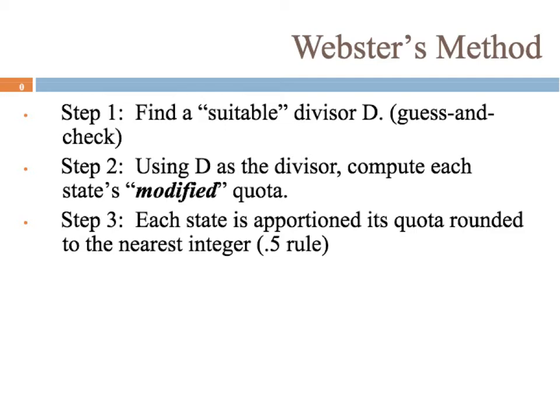We're finding a suitable divisor and using that to compute each state's modified quota. This time the rounding is a little different. With Jefferson's, we used lower quota; with Adams', we used upper quota. This time we're just going to round like normal — use the normal 0.5 rule. If the decimal is 0.5 or higher, you round up; if it's lower than 0.5, you round down to get the lower or upper quota for each state.